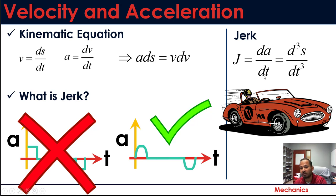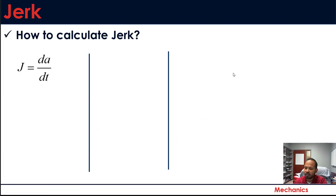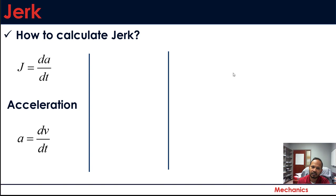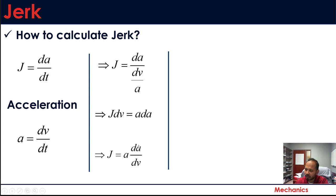Jerk is defined as da/dt, which makes it the third order derivative of position with respect to time. To derive a formula analogous to a·ds = v·dv: starting from the definition of jerk and acceleration, we rearrange to get dt = dv/a, substitute into the jerk definition, simplify, and arrive at j·dv = a·da, or equivalently j = a·(da/dv).